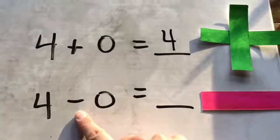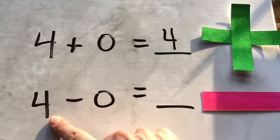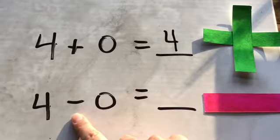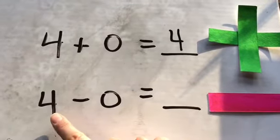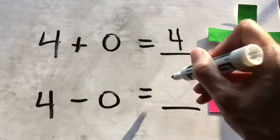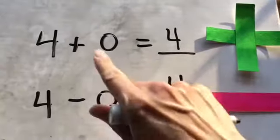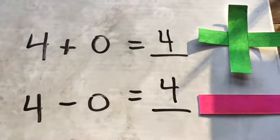Now what if I'm subtracting? If I have four donuts and I take away zero, I still have four donuts. So four minus zero is four. When you are subtracting or adding zero, the number that you started with doesn't change.